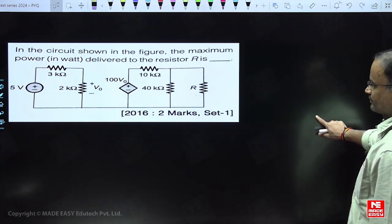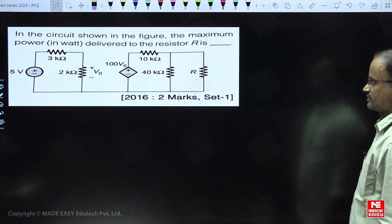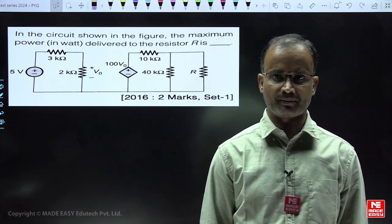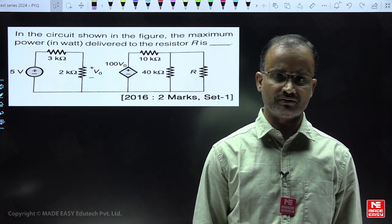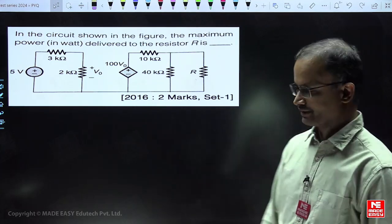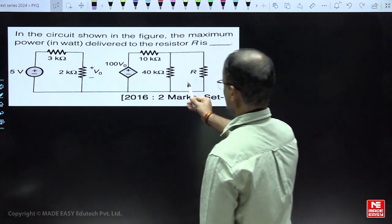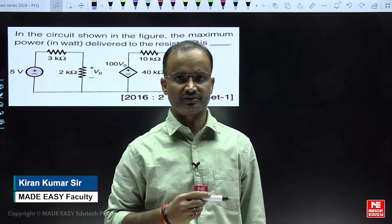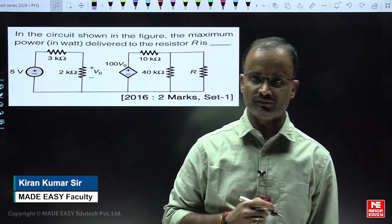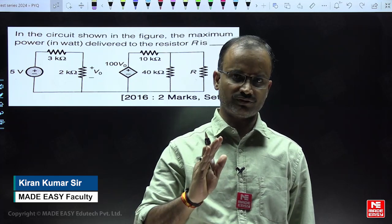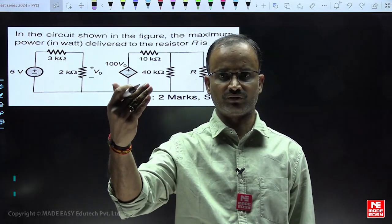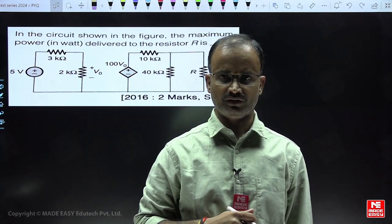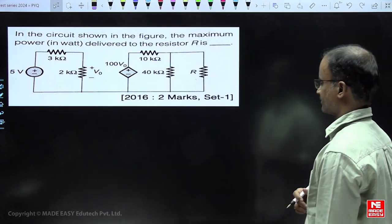In this example, the requirement is maximum power delivered to the load resistor. To obtain this maximum power, the entire complex network can be replaced by a single equivalent circuit. This means we can go for either Thevenin's theorem or Norton's theorem. In this example, I am going with Thevenin's theorem.